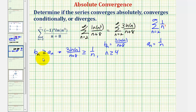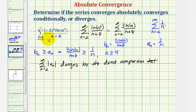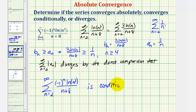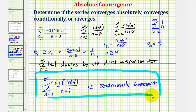Because we made this comparison to a known diverging series, the summation from n equals two to infinity of the absolute value of a sub n diverges by the direct comparison test. Therefore the original alternating series is conditionally convergent. If the absolute value summation had converged, the series would be absolutely convergent, but since it diverges, we have conditional convergence.